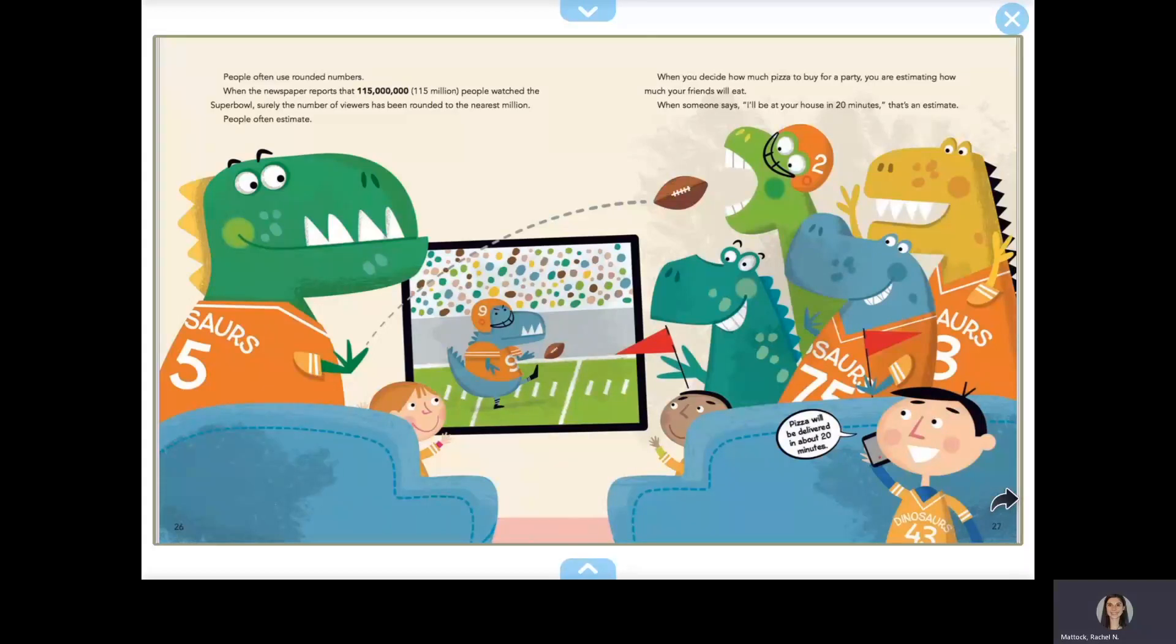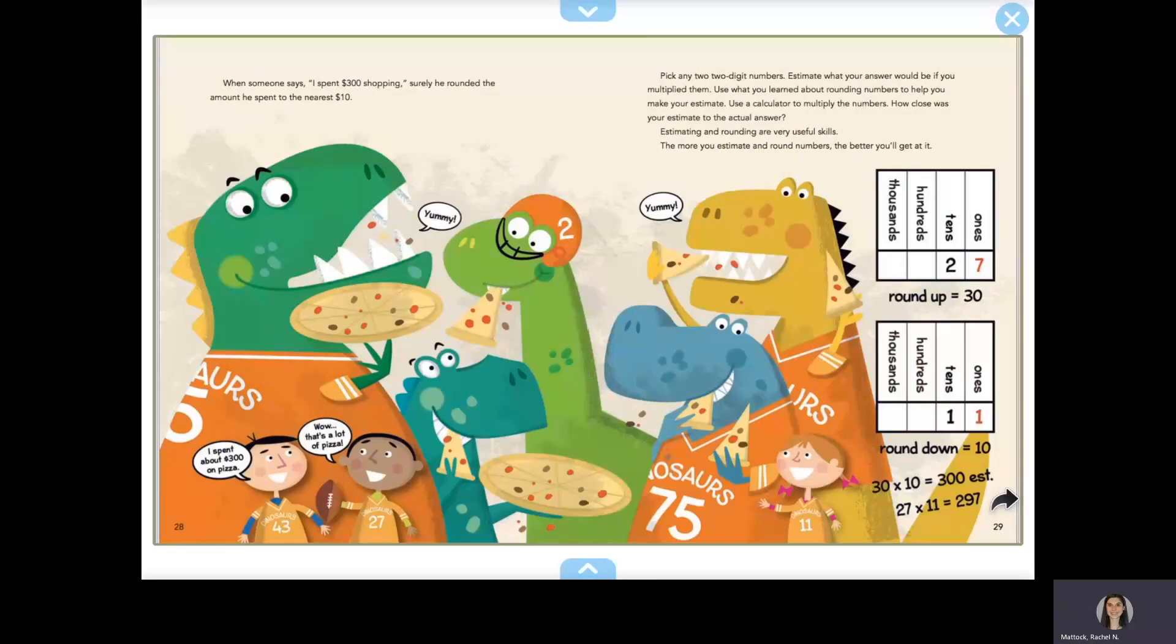People often estimate. When you decide how much pizza to buy for a party, you are estimating how much your friends will eat. When someone says, I'll be at your house in 20 minutes, that's an estimate. When someone says, I spent $300 shopping, surely he rounded the amount he spent to the nearest ten.